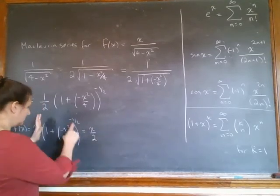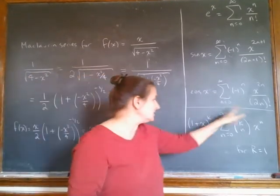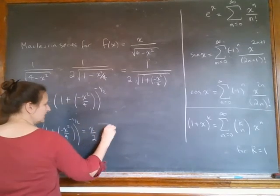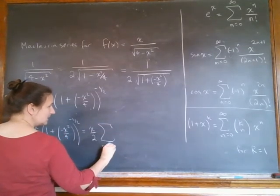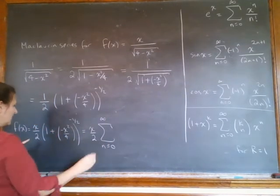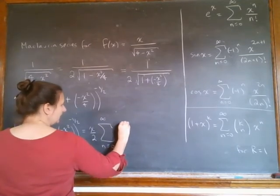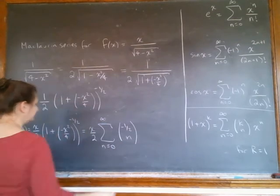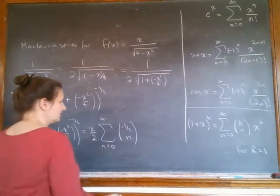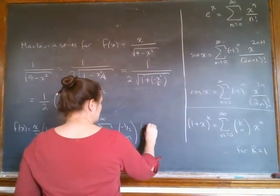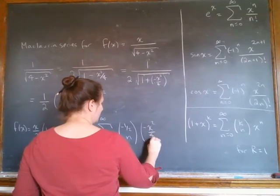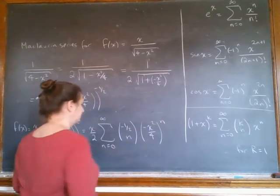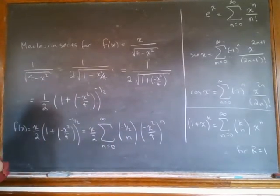So I've got the x over 2 in front here. Then I'm going to use this and this. I'm going to do sum from n equals 0 to infinity, negative 1 half choose n, and then here's my x though, minus x squared over 4.